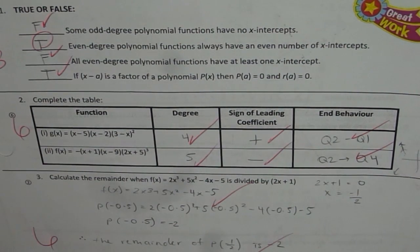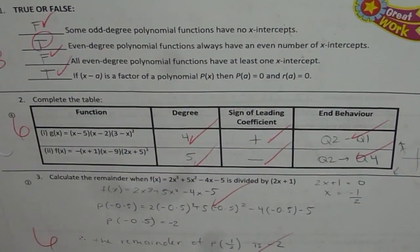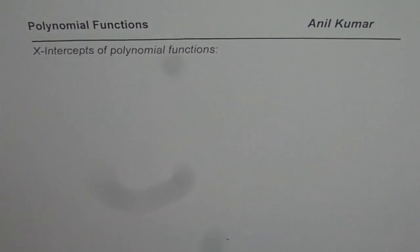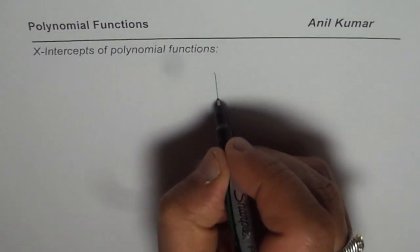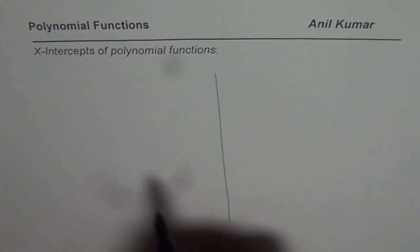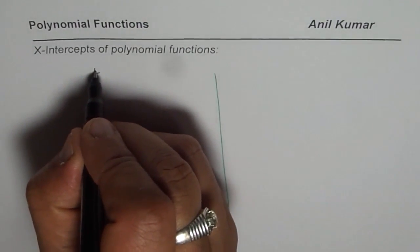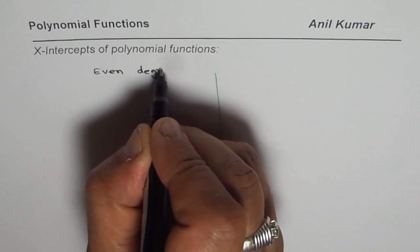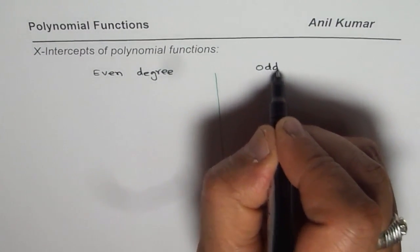Let us discuss the degree of a polynomial and its x-intercepts now. In this video, I will discuss in detail the possibility of x-intercepts relative to the degree of polynomials. As you know, polynomials could be of even degree or odd degree. So we divide them into polynomials with even degree and polynomials with odd degree.